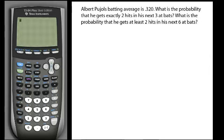So we want to know what's his probability of getting exactly two hits in his next three at bats. We're going to look at the formula, and then we'll also look at how to do this on the calculator. And so what we have is he's going up to bat three times. So this will be his first at bat, second at bat, and third at bat.